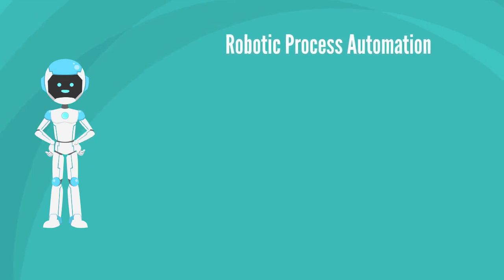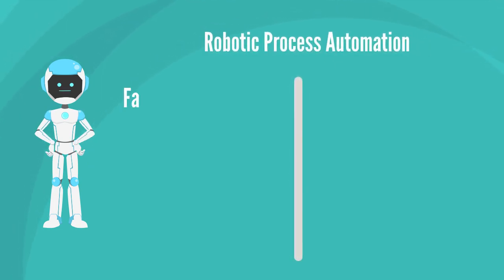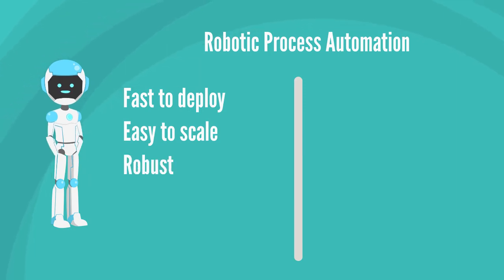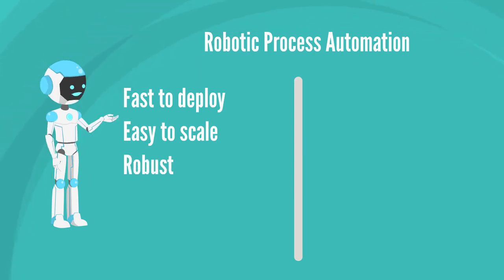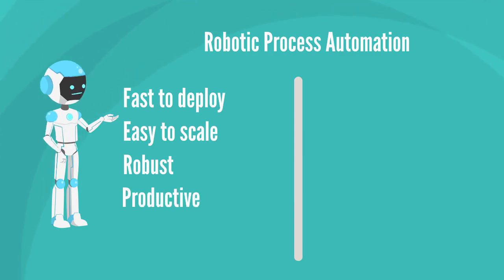We can say that RPA is fast to deploy, easy to scale, and robust. If programmed right, it will make no mistakes and is productive. A robot will work 24/7 and a lot faster than any human.